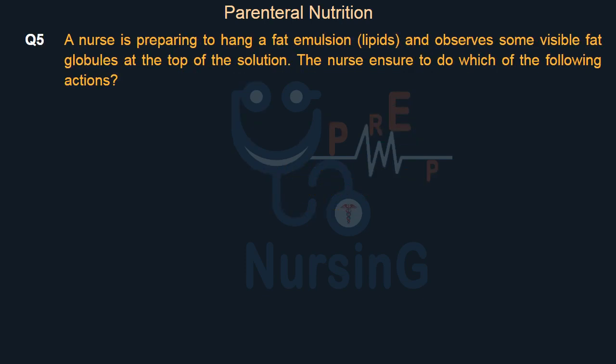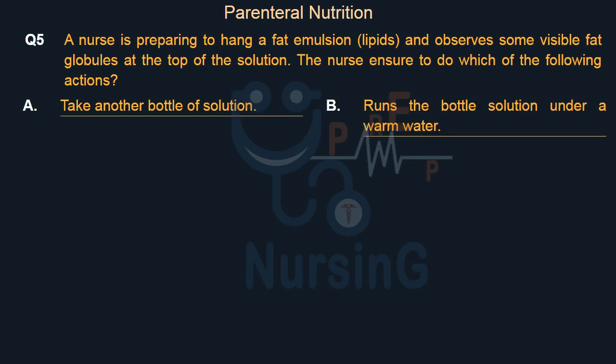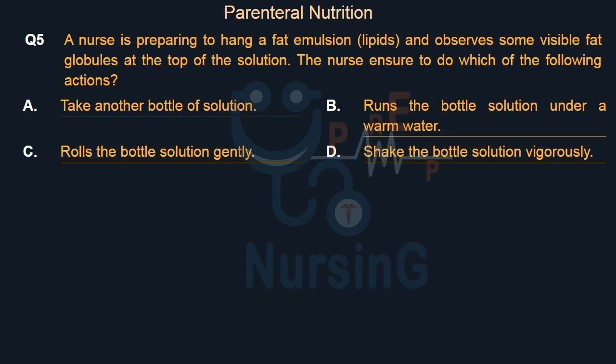A nurse is preparing to hang a fat emulsion (lipids) and observes some visible fat globules at the top of the solution. The nurse should do which of the following actions? Option A: Take another bottle of solution. Option B: Run the bottle solution under warm water. Option C: Roll the bottle solution gently. Option D: Shake the bottle solution vigorously.